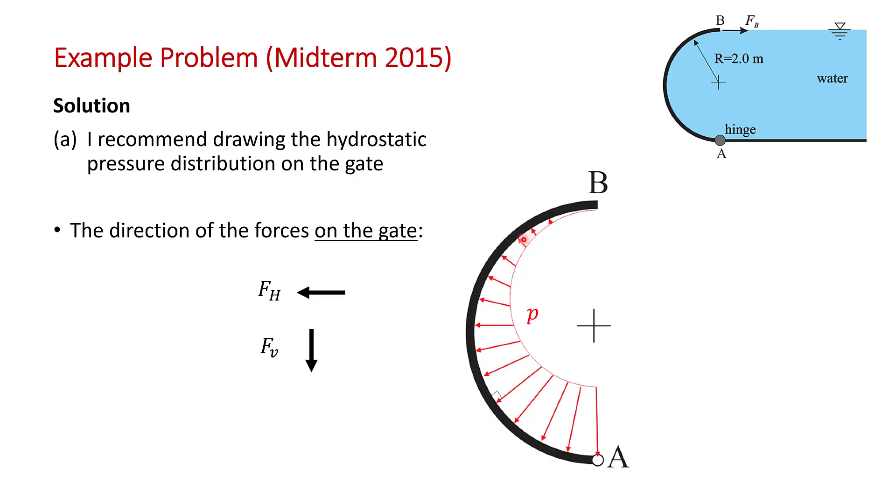There's some small areas here that have an upward component, but the larger areas at the bottom of the distribution have a much larger vertical component. So the net vertical force on the gate from the water is going to be downwards. So right away, we know the directions. Now it's just a matter of getting the numbers.